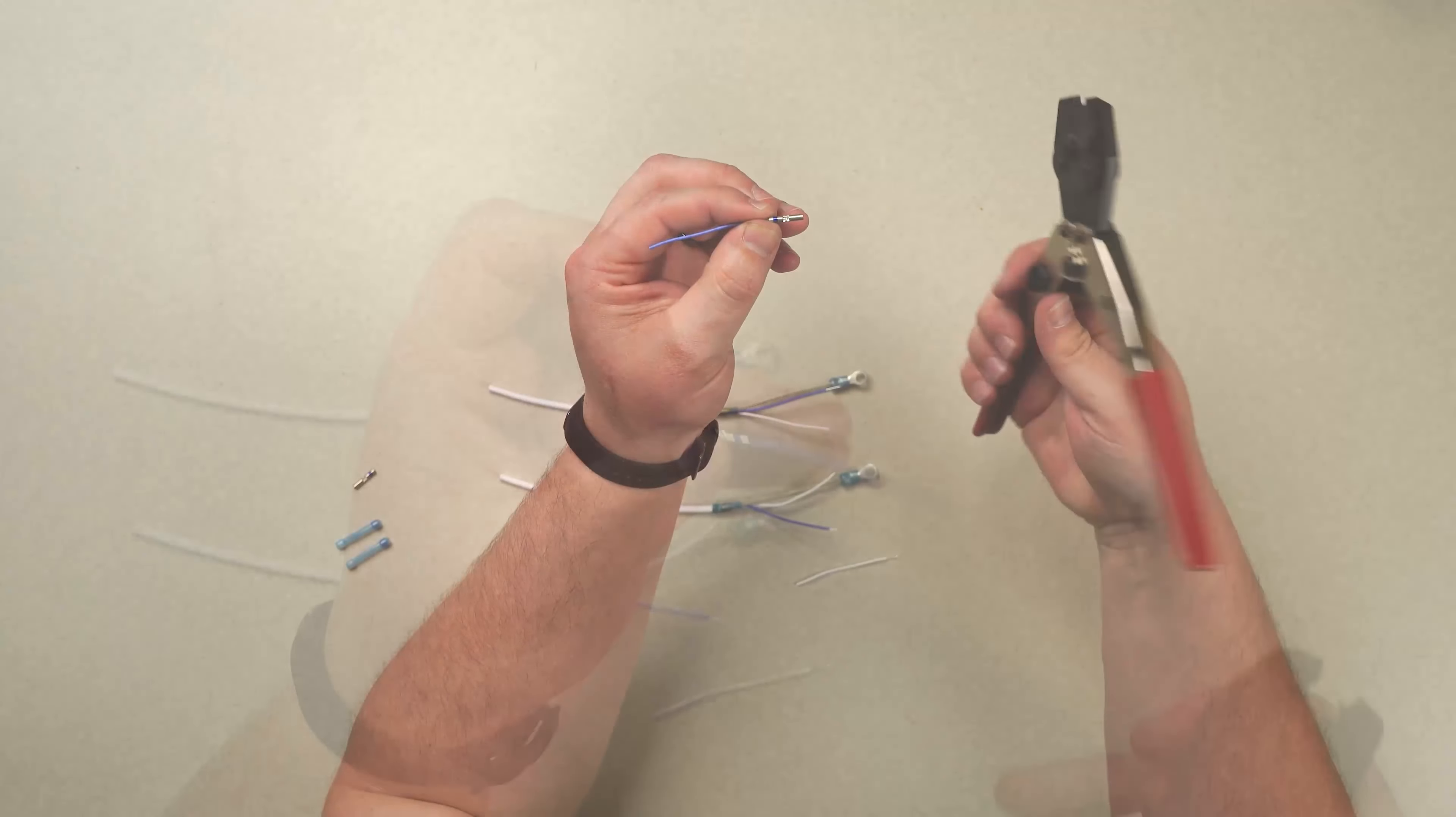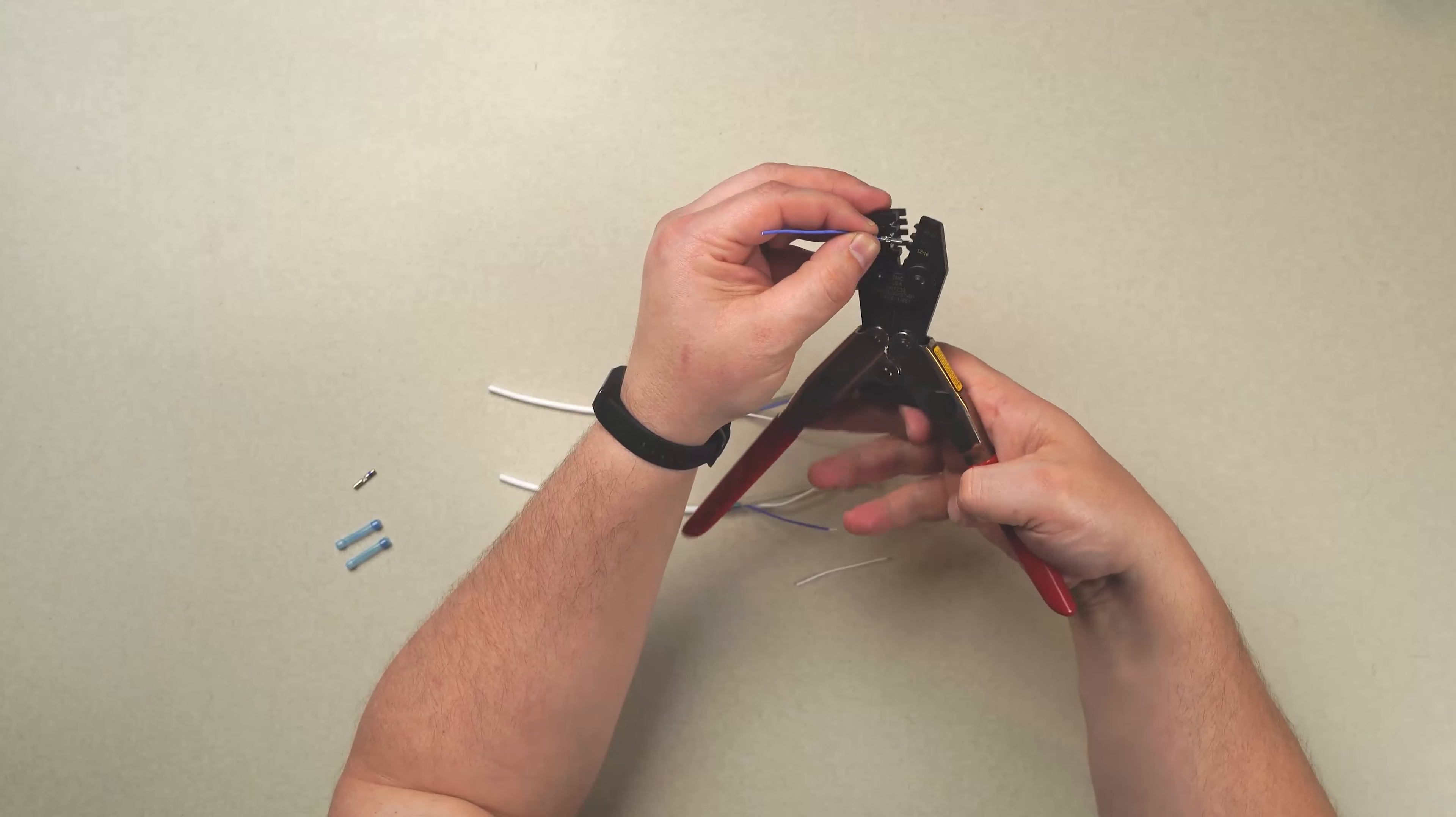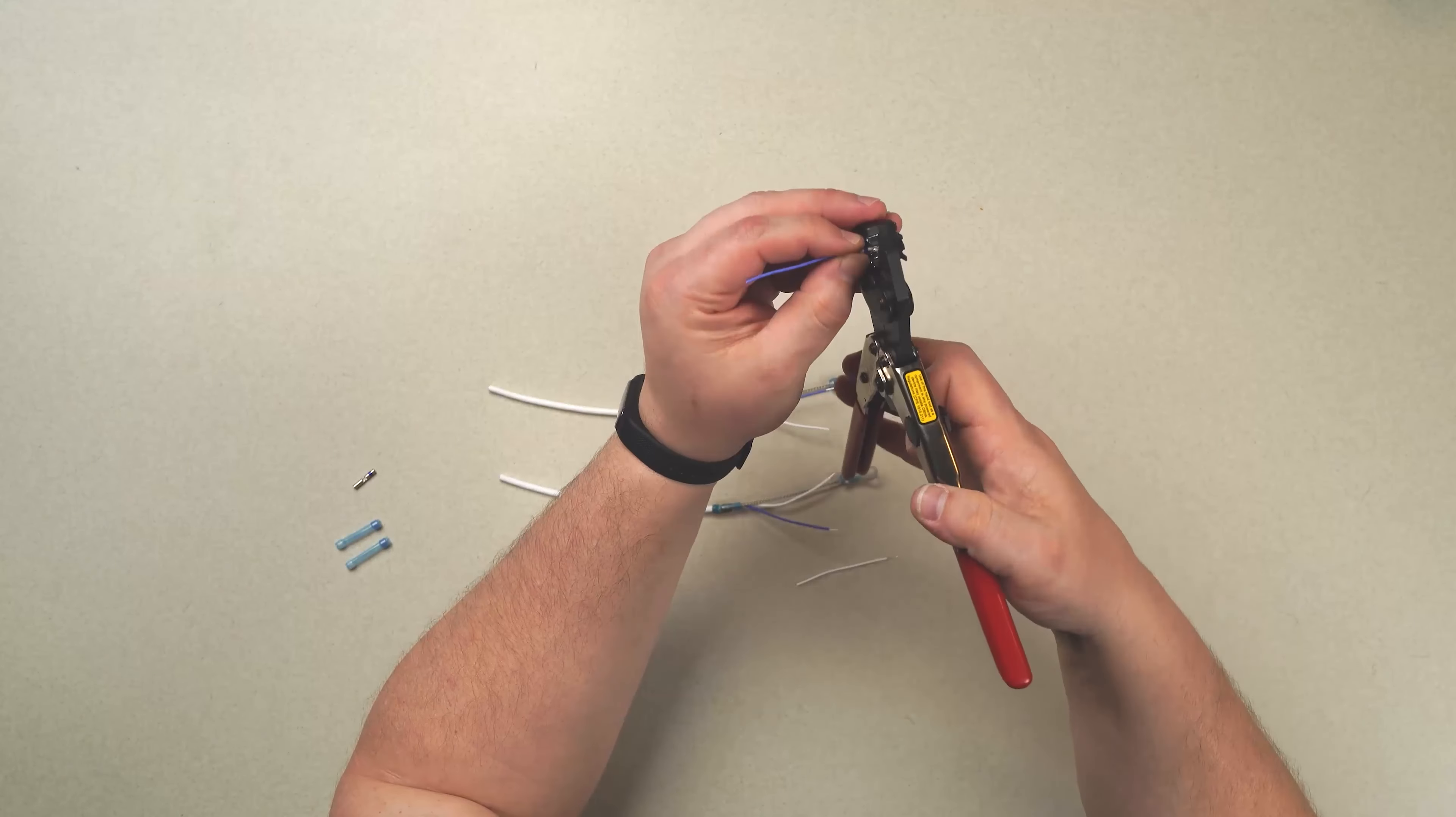We grab our crimping tool, lining it up with the proper color coating, and then applying the crimp.